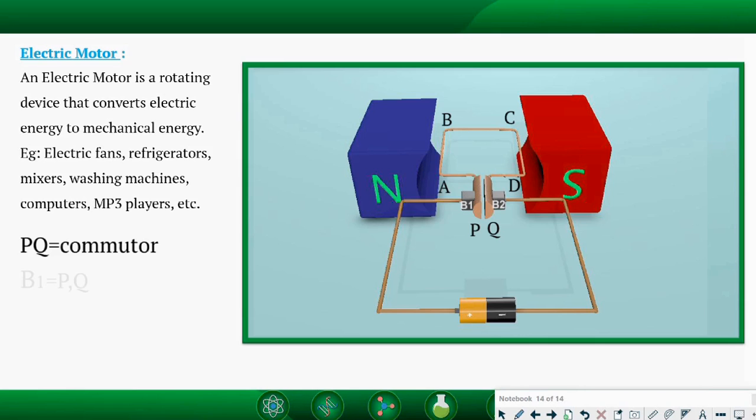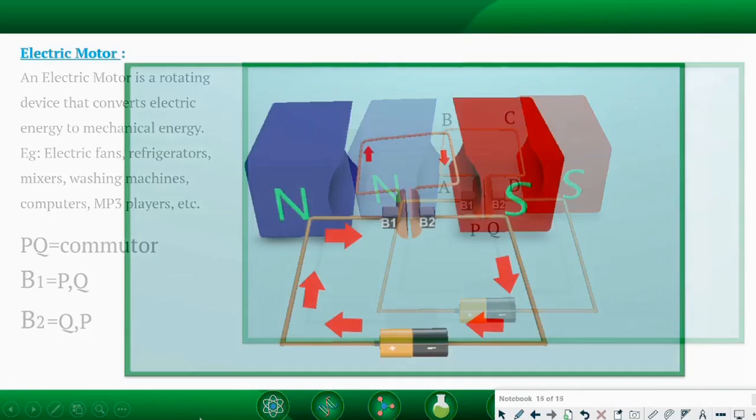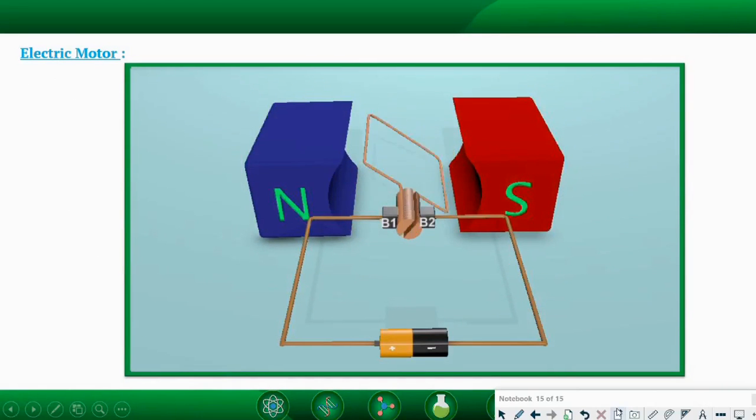B1 will be connected to ring P and then to Q. Similarly, brush B2 will get connected to Q and then to P, changing the direction of current in the coil. To understand the working of electric motor, we will examine different cases of how rotation occurs. In the first case,